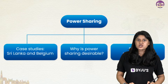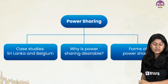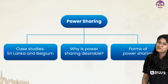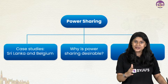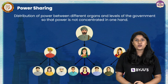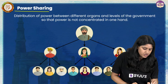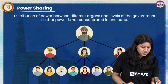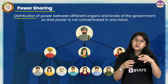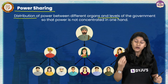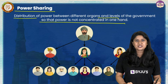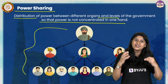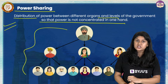When we talk about the chapter of power sharing, we can divide it into three important parts. We have the case study of Sri Lanka and Belgium, we have why power sharing is desirable, and third and most important, forms of power sharing. Before we get into the details, it's very important to understand what power sharing is. Power sharing is the distribution of power between different organs or levels of government so that power is not concentrated in one particular hand. When there is a distribution of power, the chances of misuse are reduced and it is good for the people of the nation.